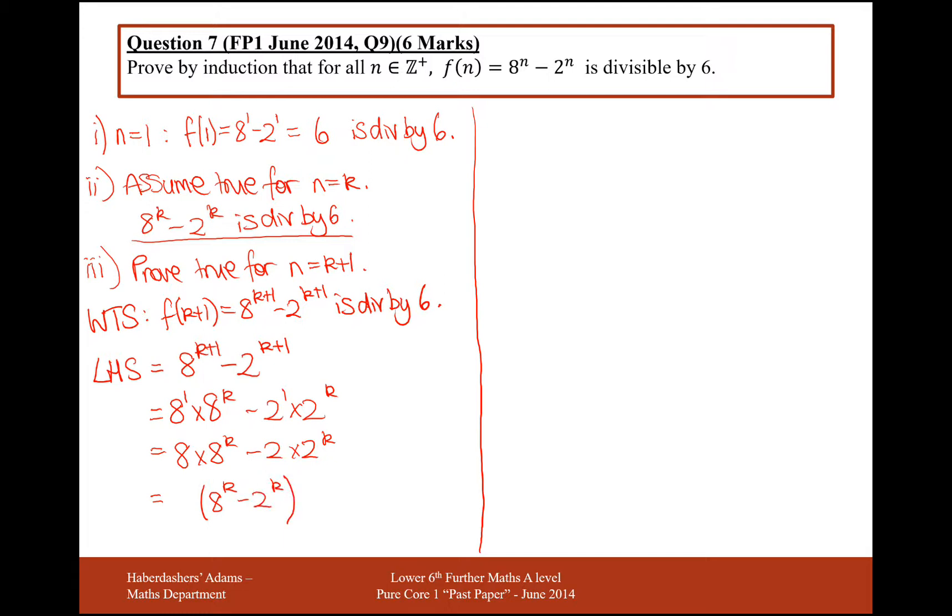My assumption is going to help me prove this, so I need that in there. But I've got the 8 to the k times by 8, so I'll put an 8 at the front of that factor.